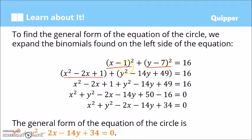For (y − 7)², the process is the same. You can write it as (y − 7)(y − 7), giving y² minus twice the product of y and 7 — that is 14y — so negative 14y, plus the square of 7, which is 49. So (y − 7)² expands to y² − 14y + 49. We also carry the 16 on the right side.